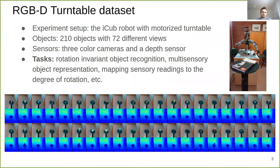The first data set that I will introduce is the RGBD turntable data set. This data set is constructed with a motorized turntable. To capture different object views, we pick one object and put it on the turntable, then we rotate the turntable.